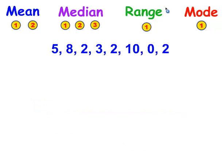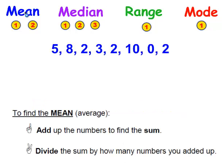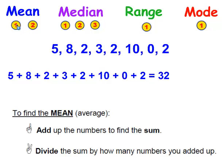Let's try it again. First we're going to find the mean. There are two steps: the first is to add up the numbers to find the sum — the sum is 32. The second is to divide that sum by how many numbers you added up. I added up 1, 2, 3, 4, 5, 6, 7, and 8 numbers. So it's 32 divided by 8, and the mean is 4.